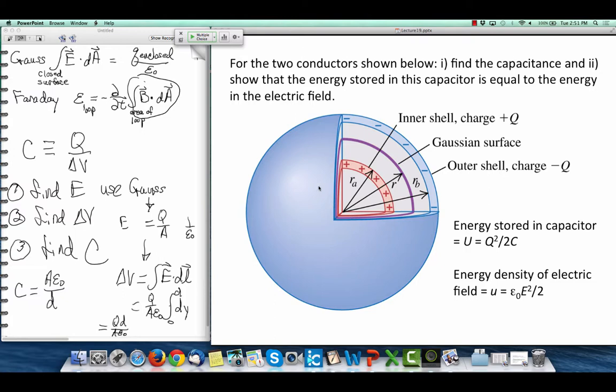This red right here is a cutaway view of a small sphere inside the outer sphere. The outer sphere is a hollow conductor. The inner sphere, it turns out, is a hollow conductor, but that doesn't really matter.